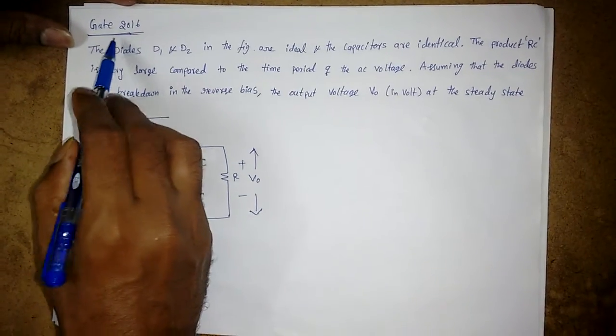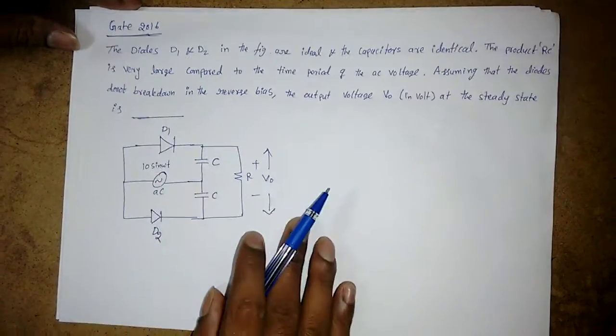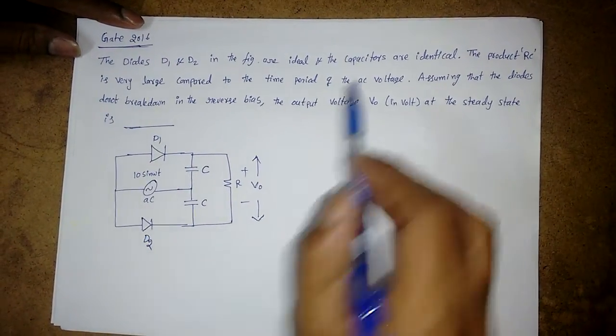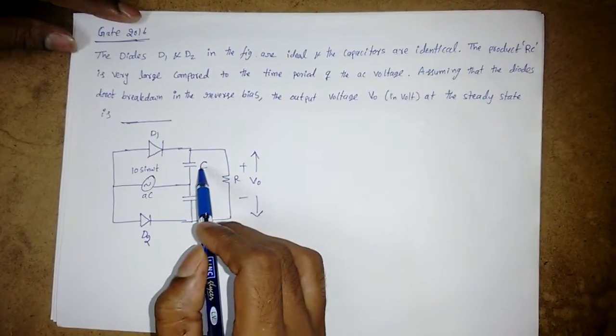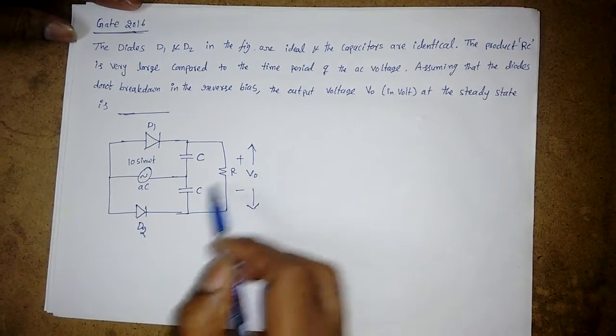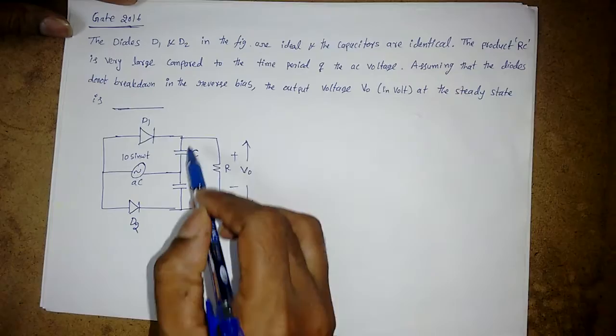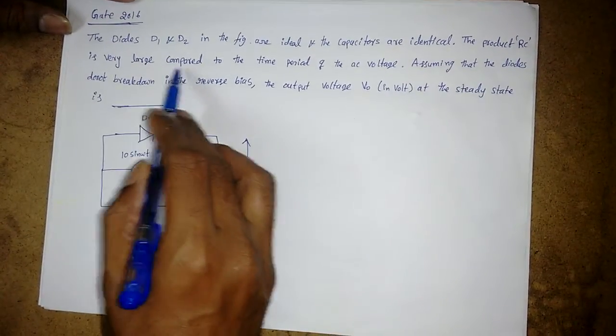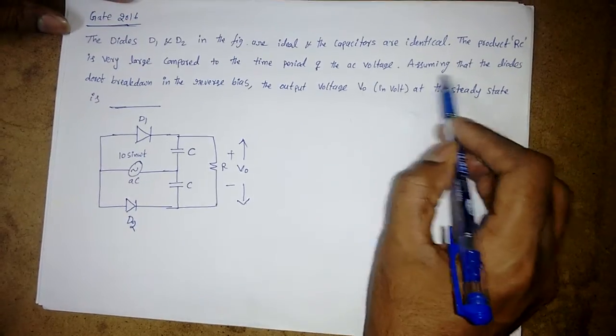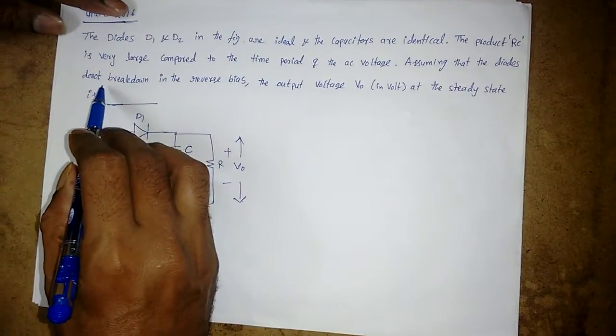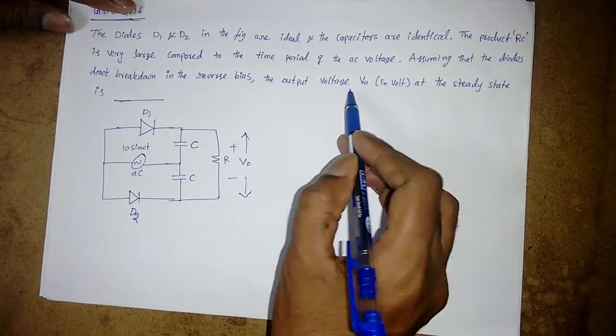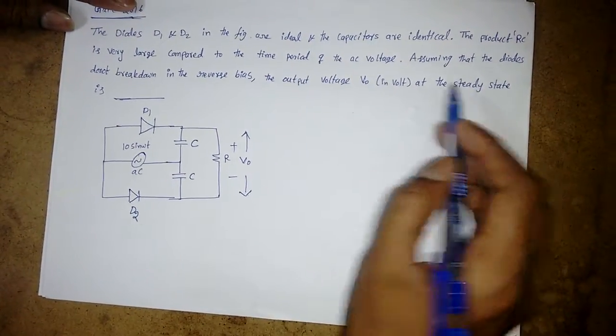We will discuss one more GATE problem from 2016. The diodes D1 and D2 are ideal and the capacitors are identical. The product RC is very large compared to the time period of the input. Assuming that the diodes do not break down in the reverse bias, the output voltage V0 at the steady state is...